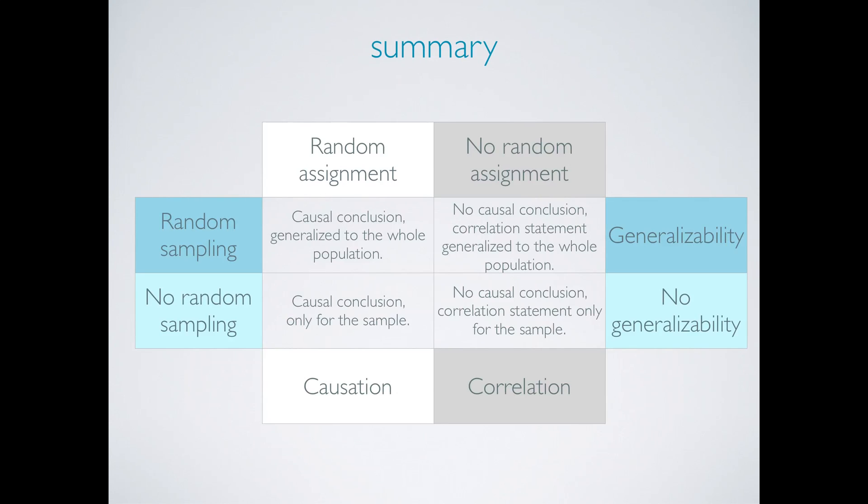So in summary, a study that employs random sampling and random assignment can be used to make causal conclusions and these conclusions can be generalized to the whole population. This would be an ideal experiment but such studies are usually difficult to carry out, especially if the experimental units are humans since it may be difficult to randomly sample people from the population and then impose treatments on them.